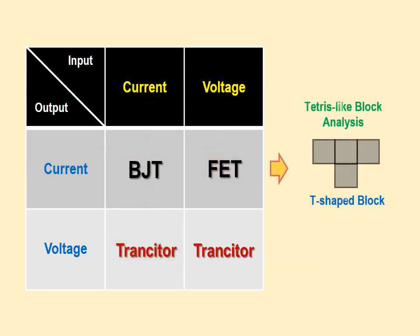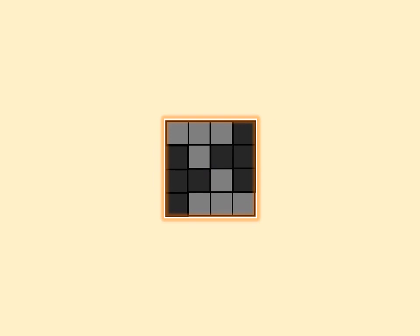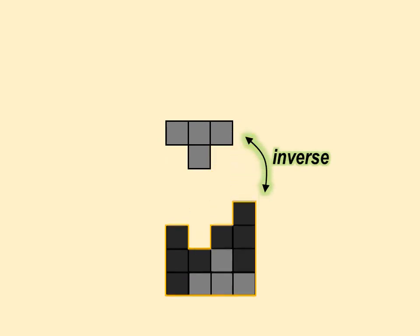To simplify this we can employ a tetris-like block analysis. Here a T-shaped block is defined for transistors as an easy example. In order to fill a square area, we need four of them as shown here, and three of them are forming the inverse shape of the main block.